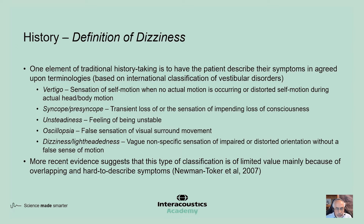Another category is the false perception of visual surround — one example is oscillopsia. The causes for this category vary quite a bit and could be central or peripheral. The final category includes lightheadedness and vague sensation of dizziness or distorted orientation, where anxiety, 3PD, and similar diagnoses are a few to consider. Recent evidence shows this classification is of limited value because of overlapping and hard-to-describe symptoms, and because clinicians sometimes ask leading questions that contaminate the patient's responses.